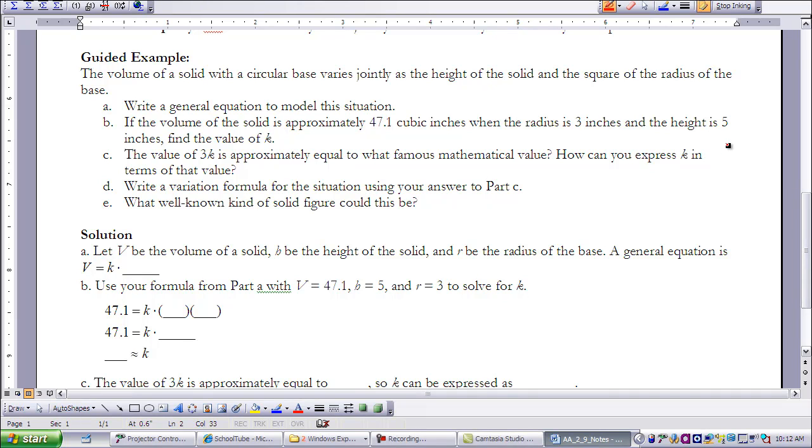So we're going to use V for the volume of the solid, H for the height of the solid, and R for the radius. And the general equation would then be V equals K times R squared H. Because notice they said it's the square of the radius and the height of the solid.